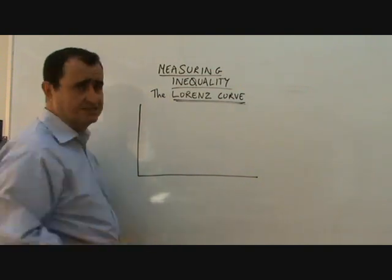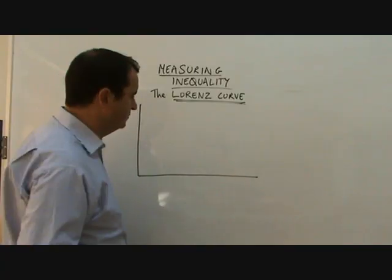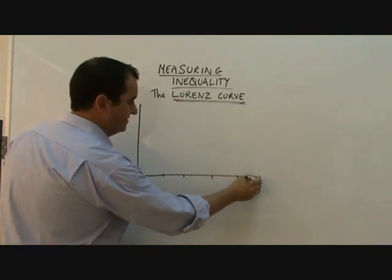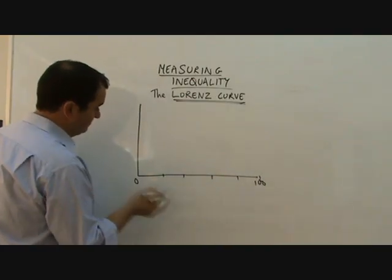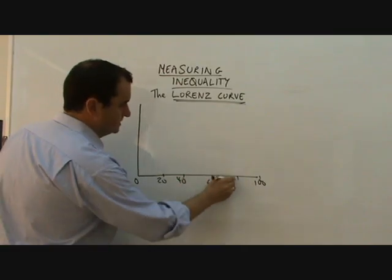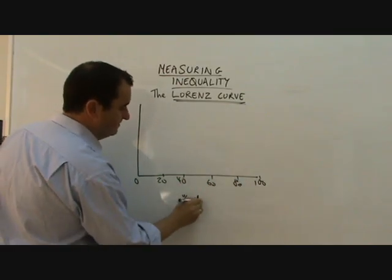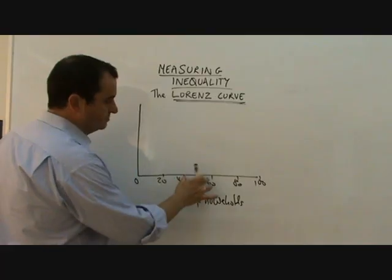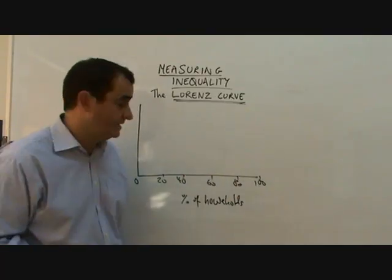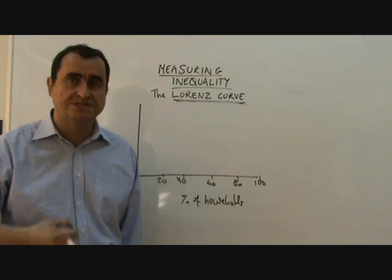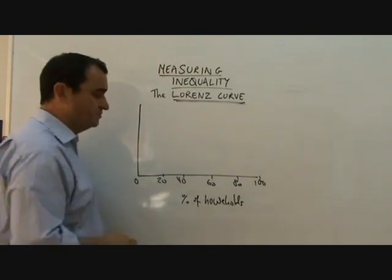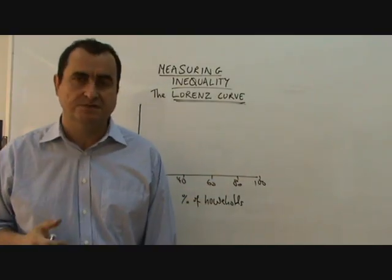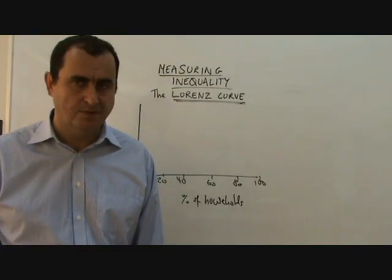Well we use a technique called the Lorenz curve to show inequality and here's how it works. Along the bottom we will have, let's split this up into five groups of very roughly done 20, 40, 60, 80. This is percent of households and we talk about quintile groups. Groups of 20% and the first quintile group is the poorest 20% of the UK. The next quintile group is the second poorest 20% of the UK, right up to the richest 20% of the UK. When I say richest I mean by income, not by wealth.